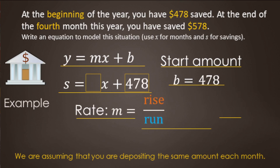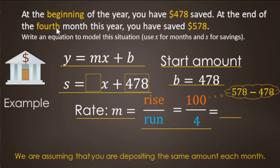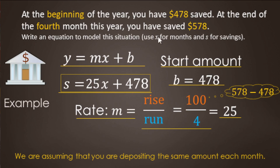Now we need to find the rate or slope — still a rise over run idea. We started at $478 and ended at $578, so subtracting gives us $100 more in the bank. That took four months. So we did $100 in four months — divide to find how much per month, and that makes $25 each month. So 25 replaces the m. The summary statement: savings equals twenty-five x plus 478 — you're putting in $25 every month, x is months, starting at $478.